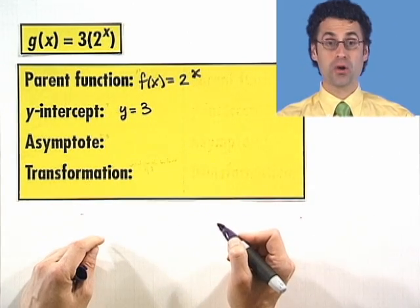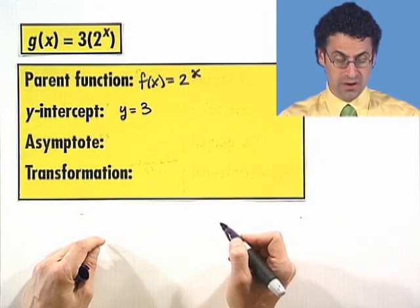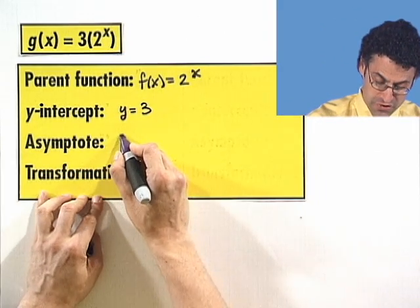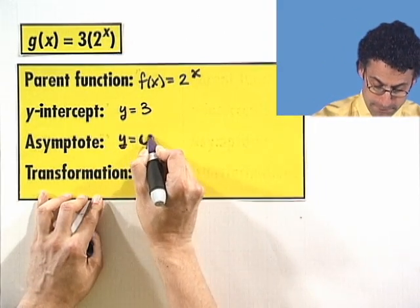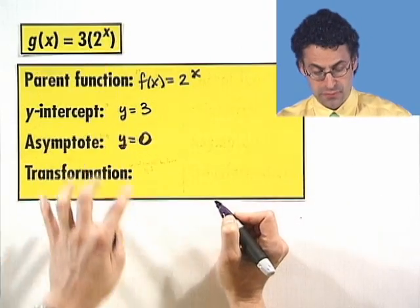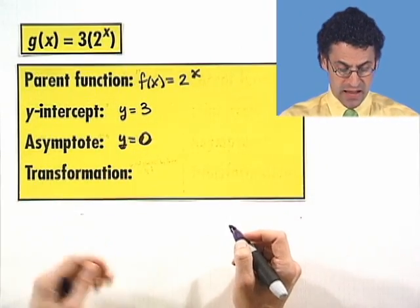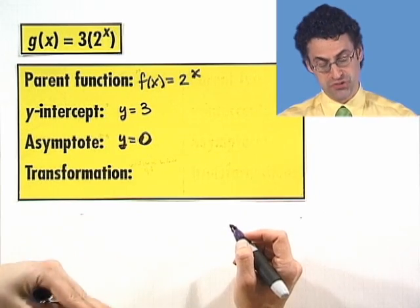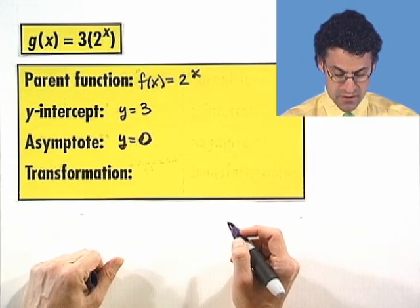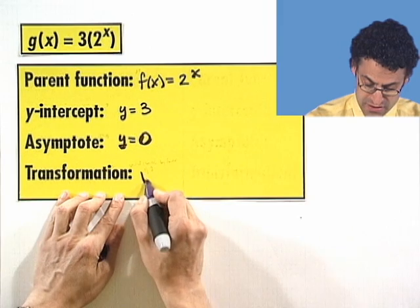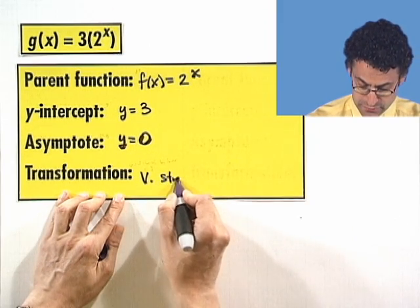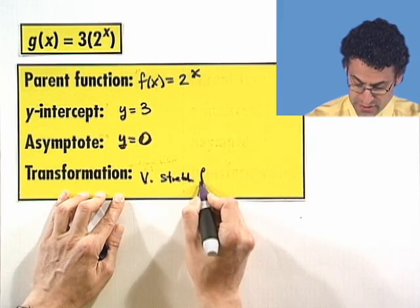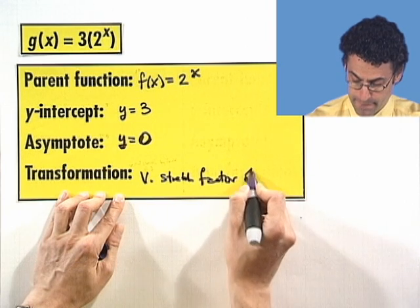Where is the horizontal asymptote? Well, the horizontal asymptote is still going to be at y equals 0, because I have no vertical shift at all. And so what's this transformation? Well, really this transformation is just a vertical stretch. We're just stretching things out by a factor of 3. So vertical stretch by a factor of 3.